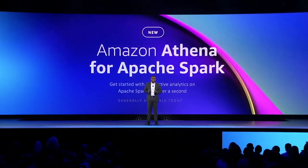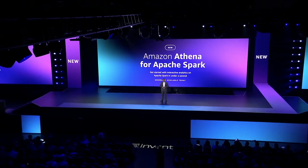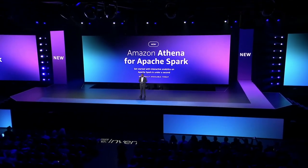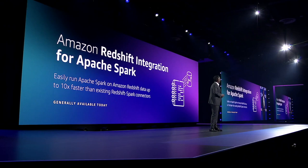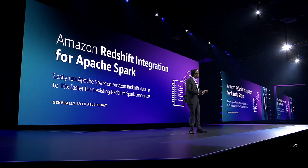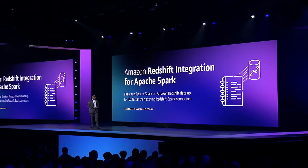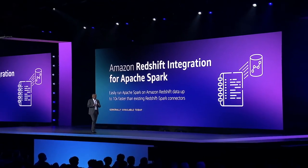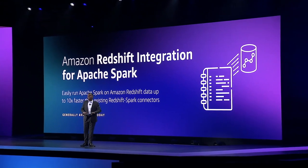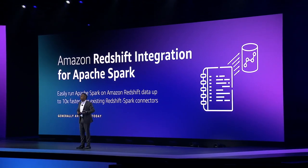Welcome to day three of re:Invent. Today I'm thrilled to announce Amazon Athena for Apache Spark, which allows you to start running interactive analytics on Apache Spark in just under one second. We also announced Amazon Redshift integration for Apache Spark, which makes it easier to run Spark applications on Redshift data from other AWS analytics services — enabling EMR applications to access Redshift data up to 10x faster compared to existing Redshift Spark connectors, with a fully certified connector for secure analytics and ML.